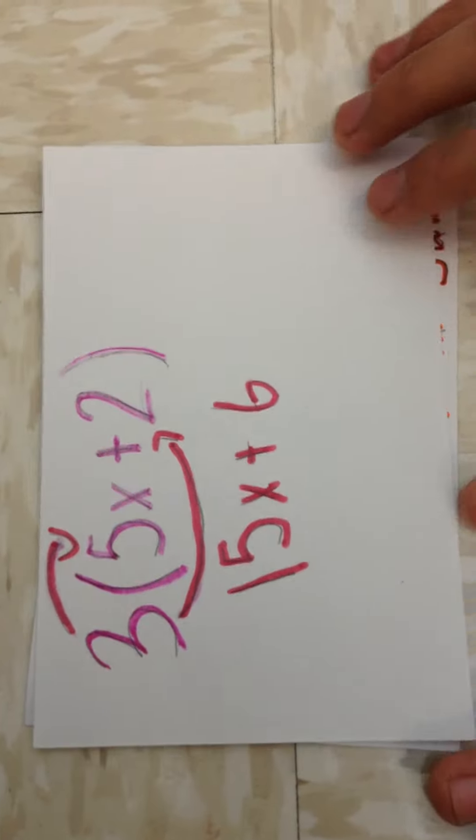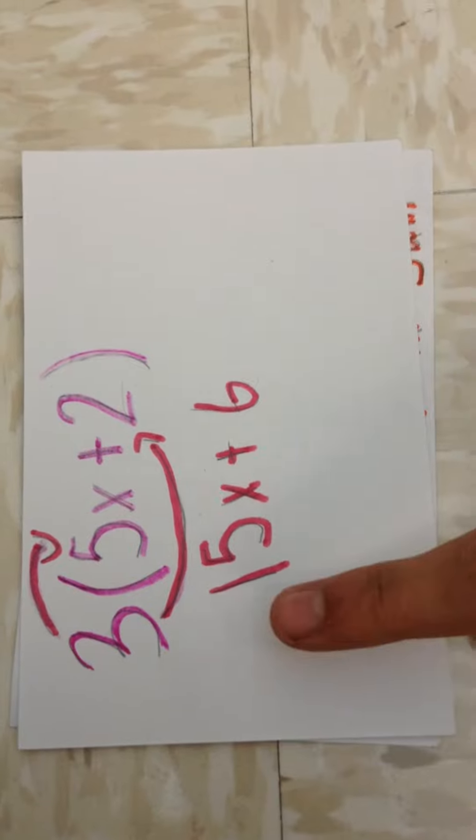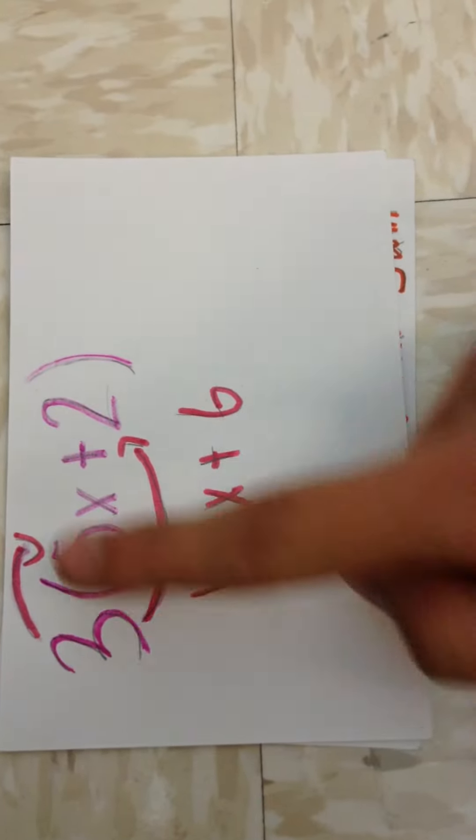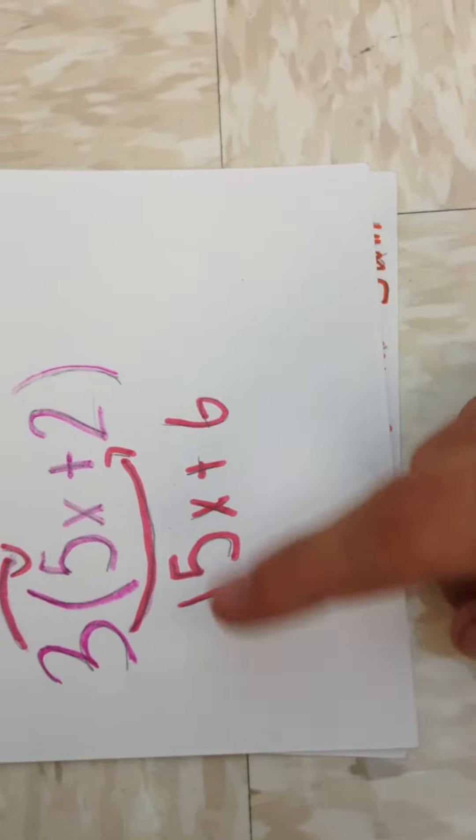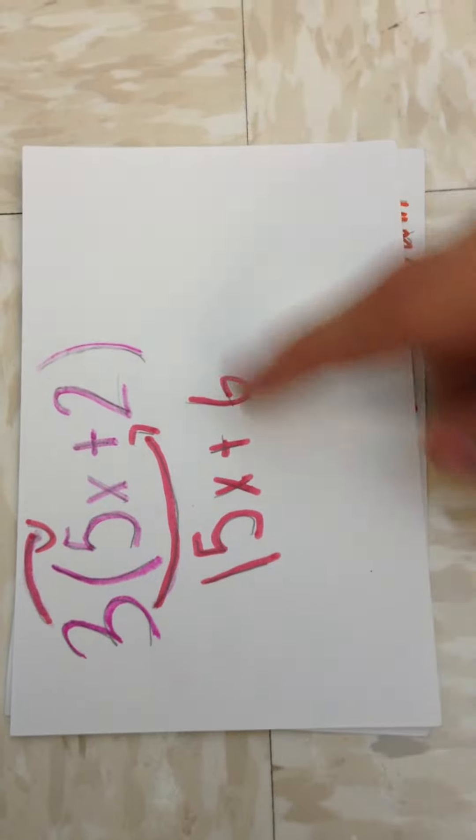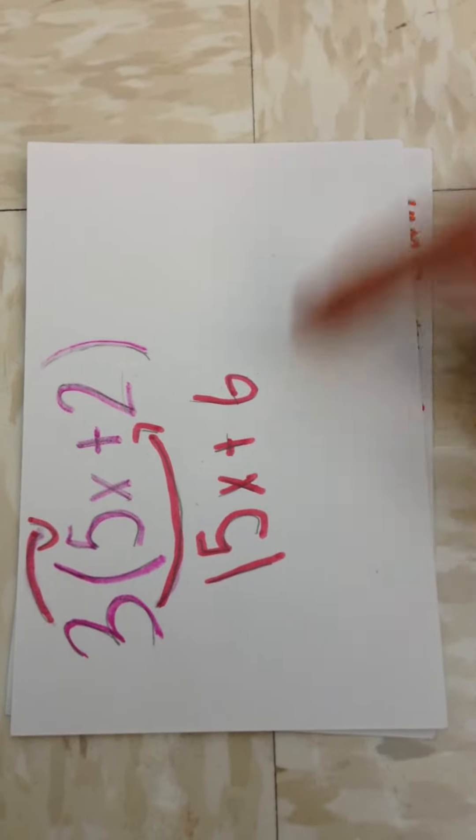And here's an actual equation for it. Where you have the same thing and you just multiply three times each number or the proper term for it would be to distribute it to each number and then you get 15x plus 6.